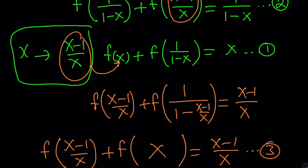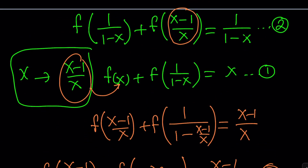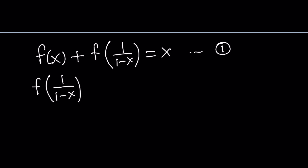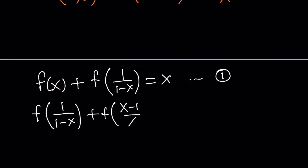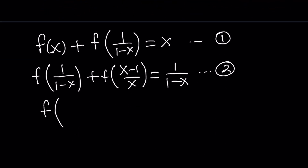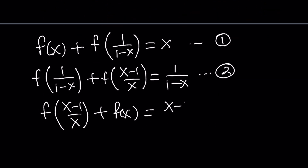Let's put all three equations together. Equation 1: f of x plus f of (1 over 1 minus x) equals x. Equation 2: f of (1 over 1 minus x) plus f of (x minus 1 over x) equals 1 over 1 minus x. Equation 3: f of (x minus 1 over x) plus f of x equals x minus 1 over x. So we've got a nice system — three variables and three equations.